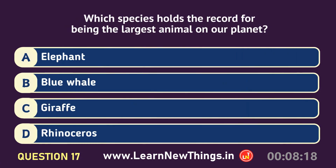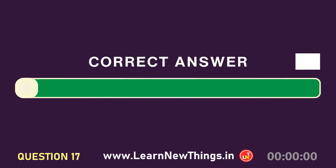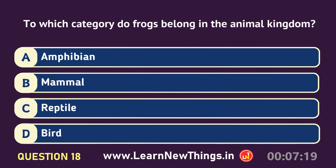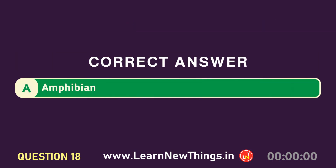Which species holds the record for being the largest animal on our planet? Blue whale. To which category do frogs belong in the animal kingdom? Amphibian.